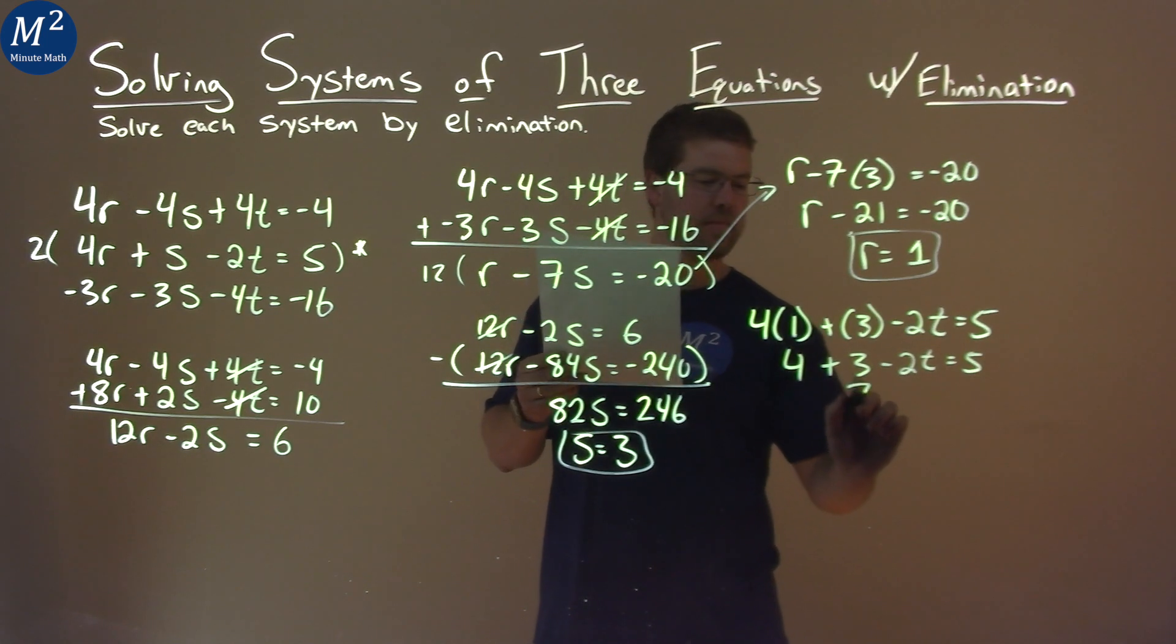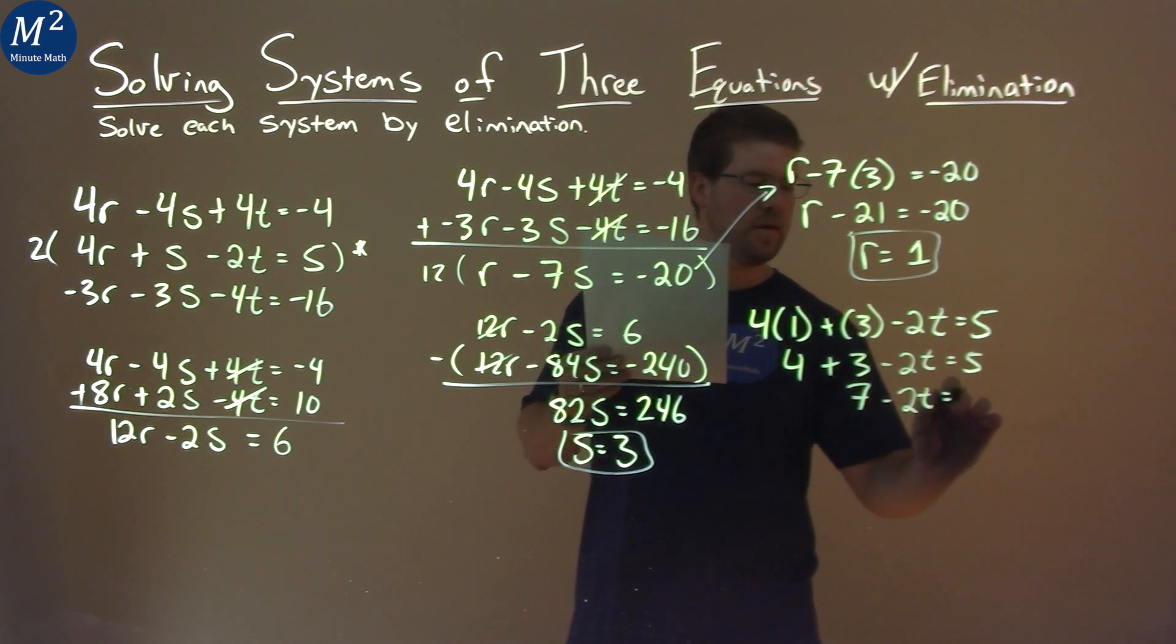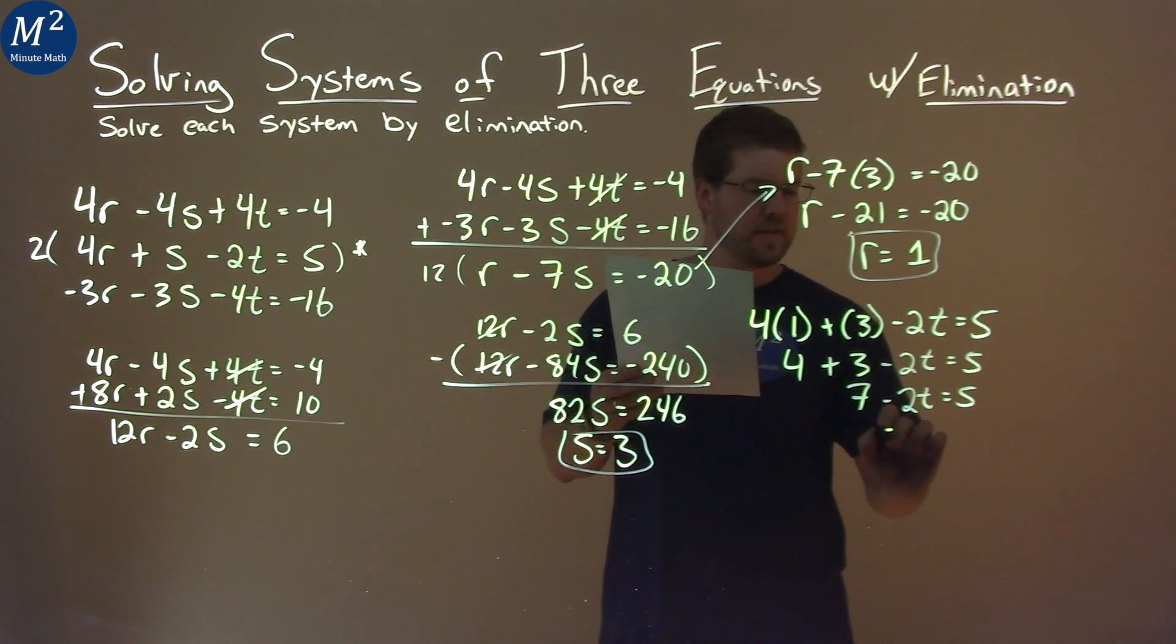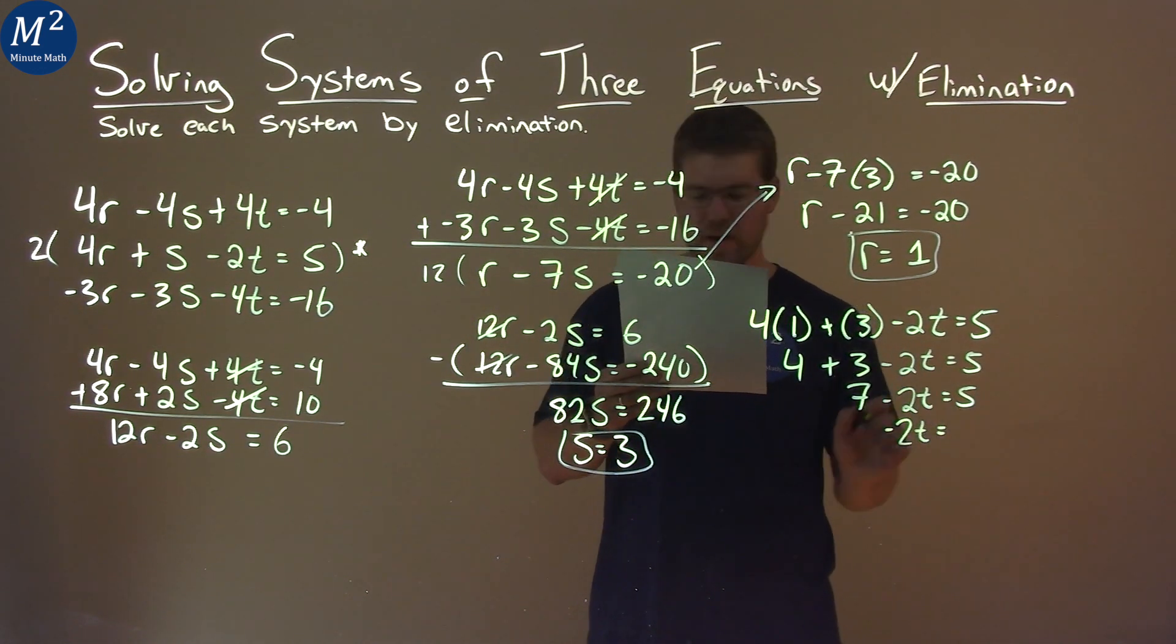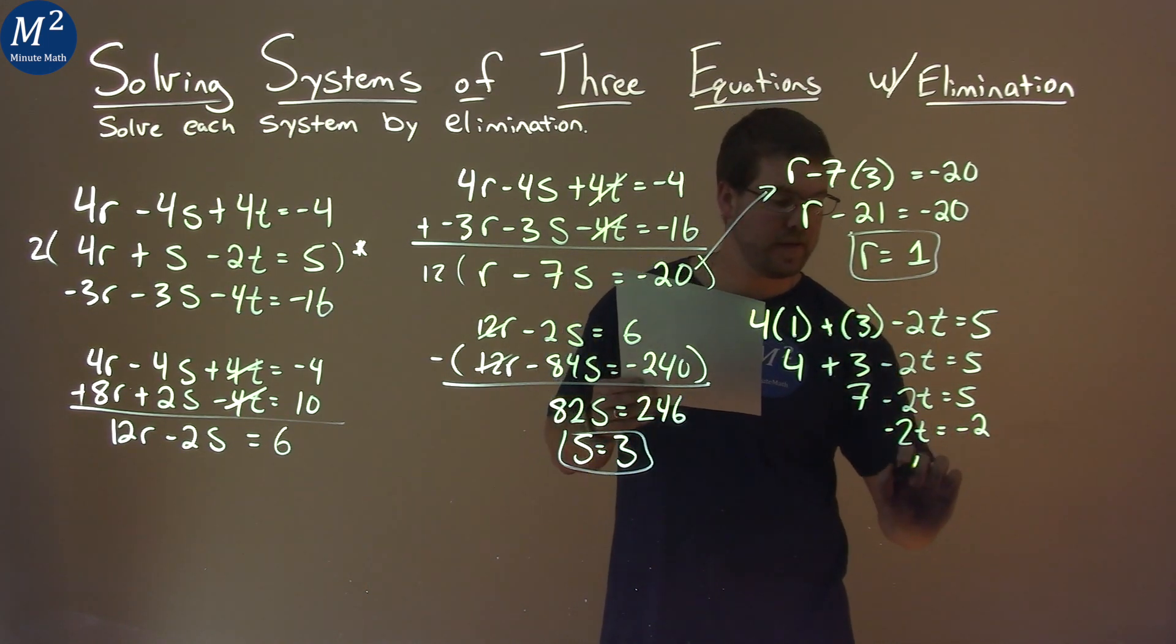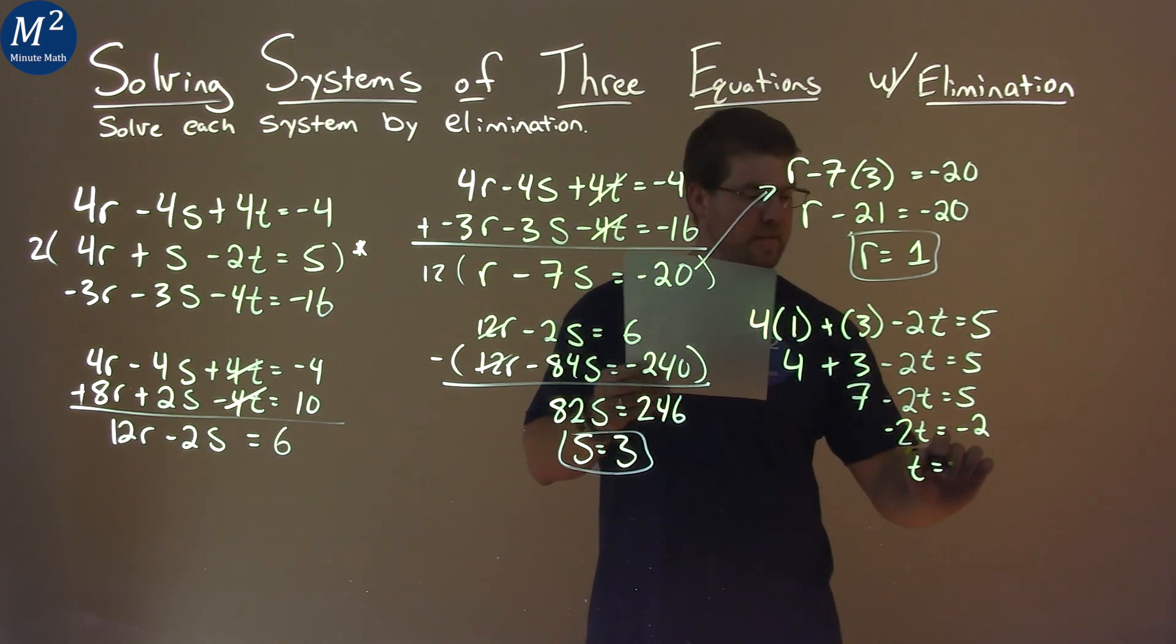Subtract the 7 to both sides. Negative 2t equals 5 minus 7 is negative 2. Divide both sides by negative 2, and t is by itself here, and that's positive 1.